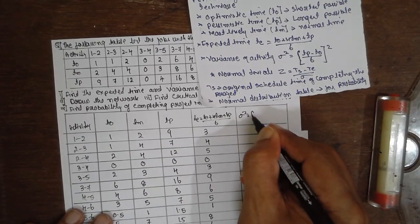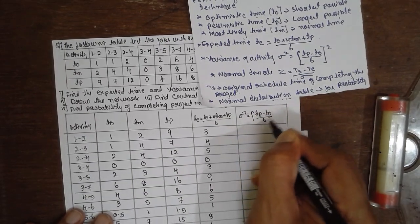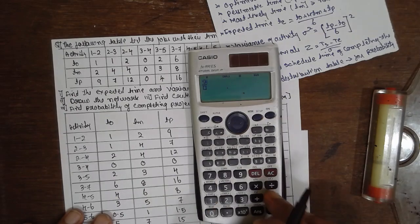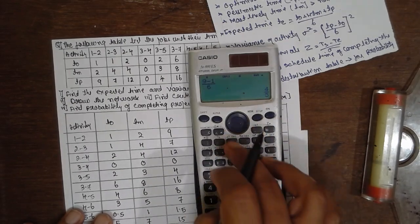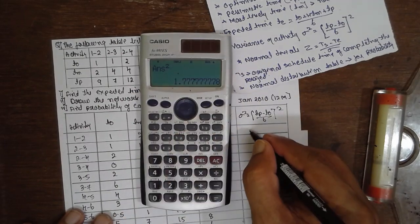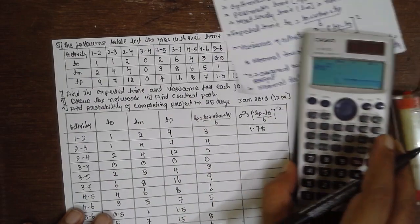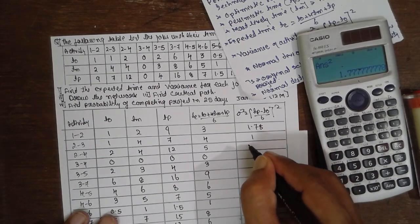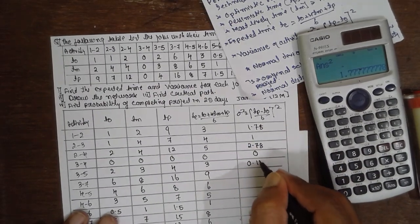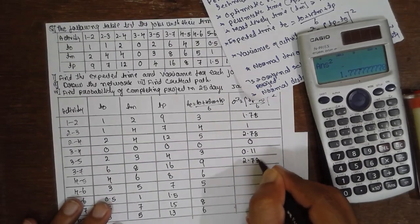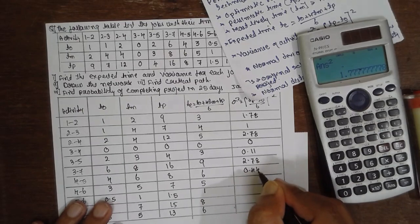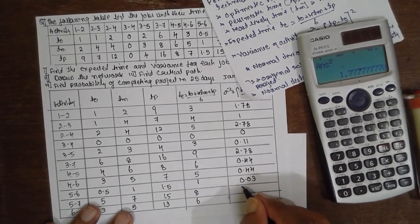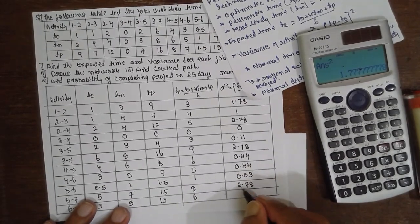Now find the variance. Sigma square equals TP minus T0 divided by 6 whole square. What is TP? TP is 9. 9 minus 1 divided by 6 whole square. This value is 1.78. Don't go for square here, just write the value. Follow the same procedure: 1, 2.78, 0, 0.11, 2.78, 0.44, 0.44, 0.03, 2.78, 2.78.